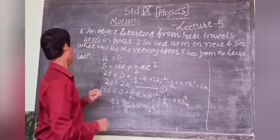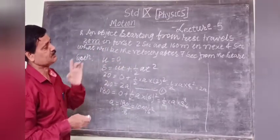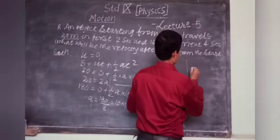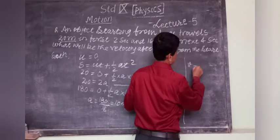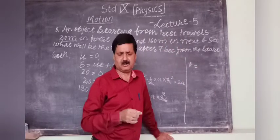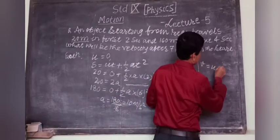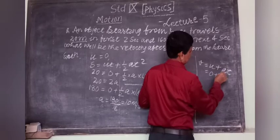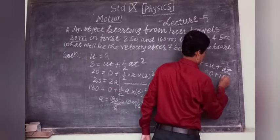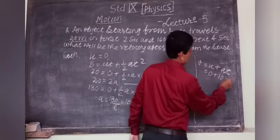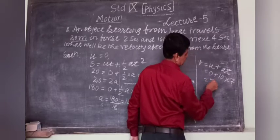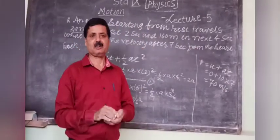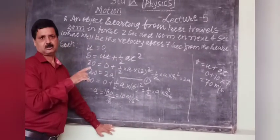Now we have to calculate the final velocity after 7 seconds from the start. Using V = u plus at, with u = 0, a = 10, and t = 7 seconds: V = 0 plus 10 into 7 = 70 meters per second. This is the solution to this question.